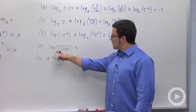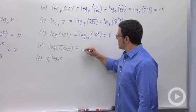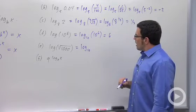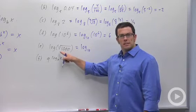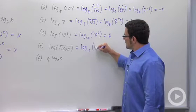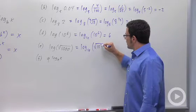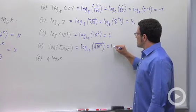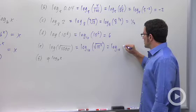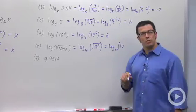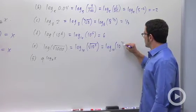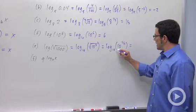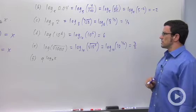Same thing here. This is the common log, log base 10. So this is log base 10. What power of 10 is this? It's the square root of 10 cubed. So that's 10 to the 3 halves. So again, log base 10 of 10 to the 3 halves is 3 halves.